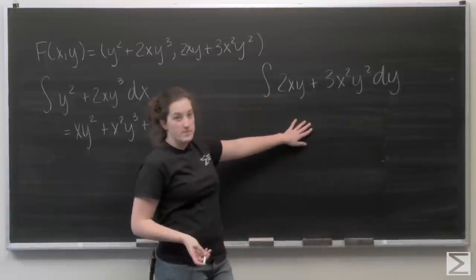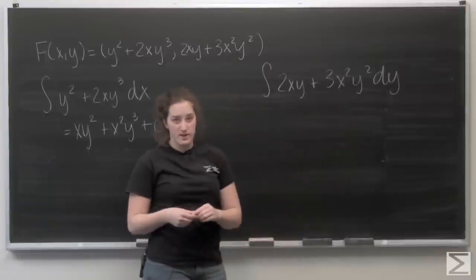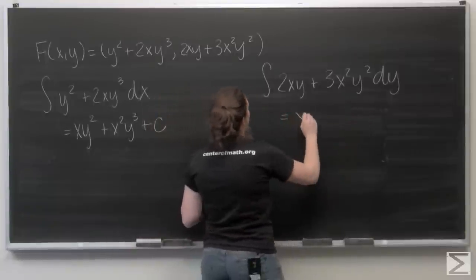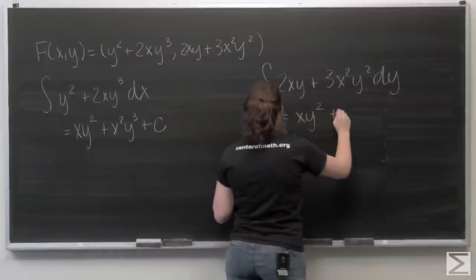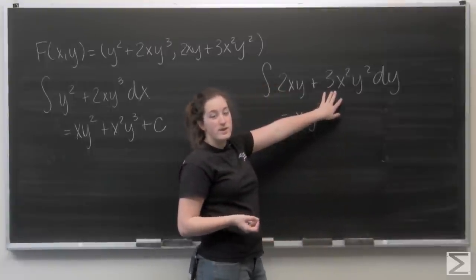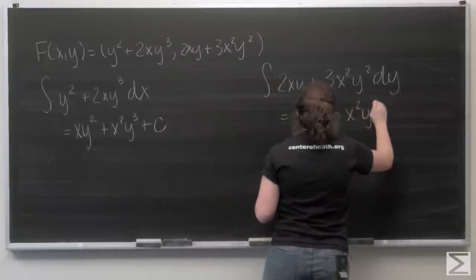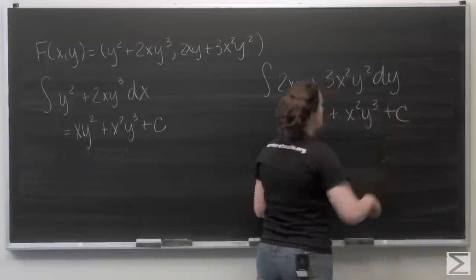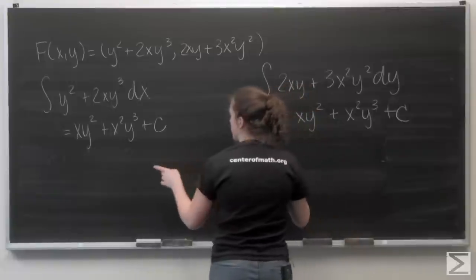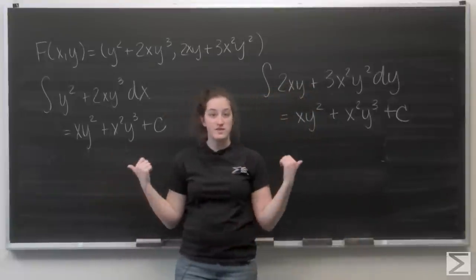Now let's move over here. The integral of 2xy with respect to y is going to be xy squared, and the integral of 3x squared y squared is going to be x squared y to the third. And again, add a constant of integration. So let's check. I can see that these two functions are actually the same.